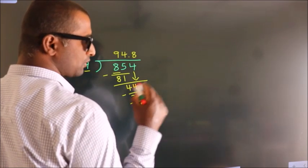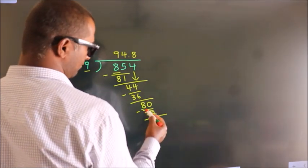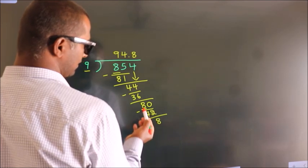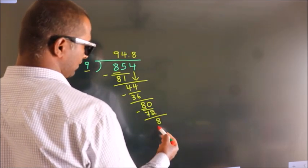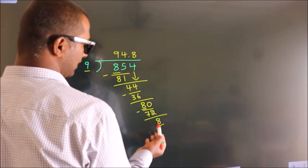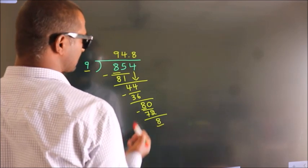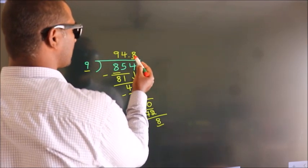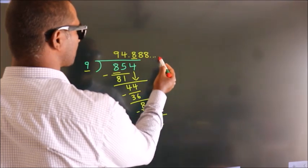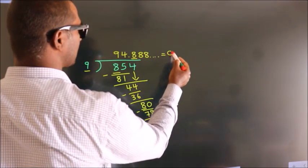Now observe. We had 8 here, and we got 8 again. That means this number keeps on repeating. So this is our quotient.